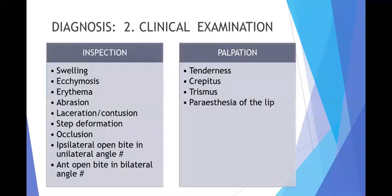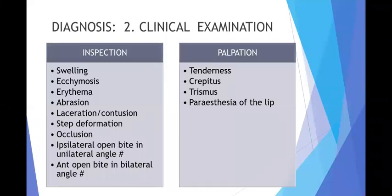For clinical examination, make it systematic by using two columns: inspection and palpation. For angle of the mandible fractures, clinical features on inspection include swelling, ecchymosis, erythema, abrasion, laceration or contusion, step deformation, occlusal derangement, ipsilateral open bite in unilateral angle fracture, and anterior open bite in bilateral angle fracture. These last two points are very specific to fracture of the angle of the mandible and must be mentioned.